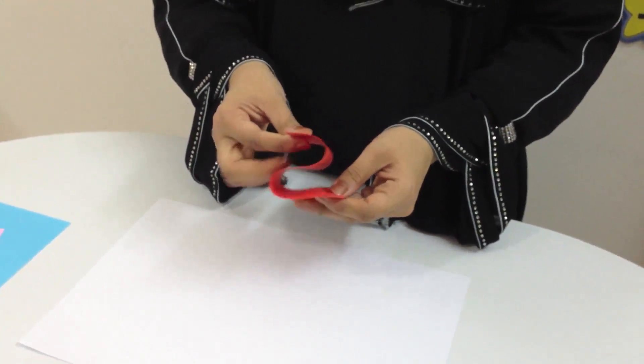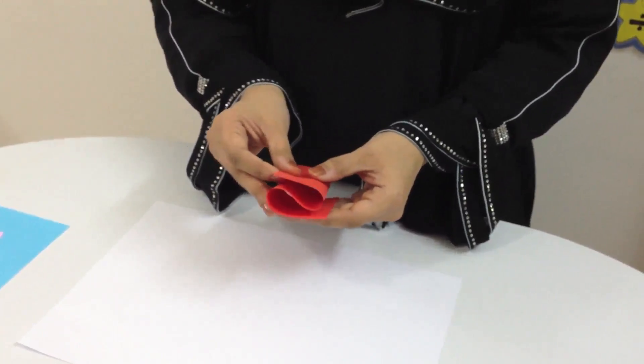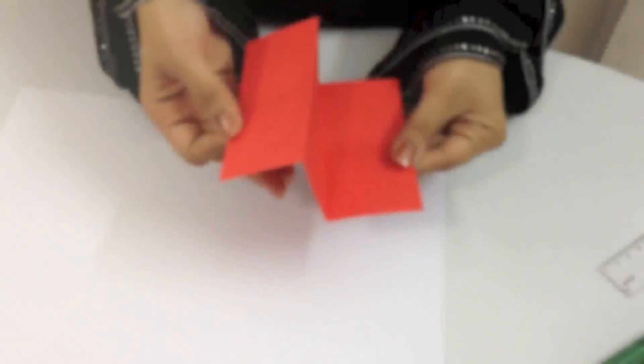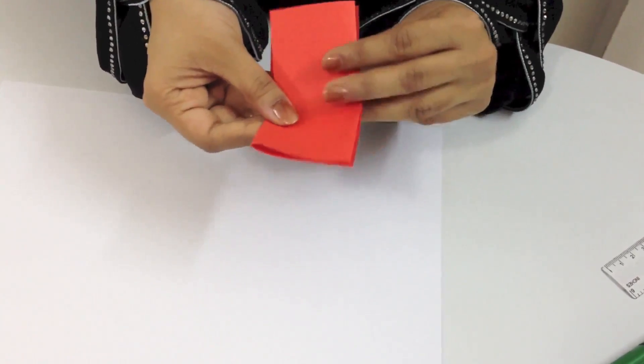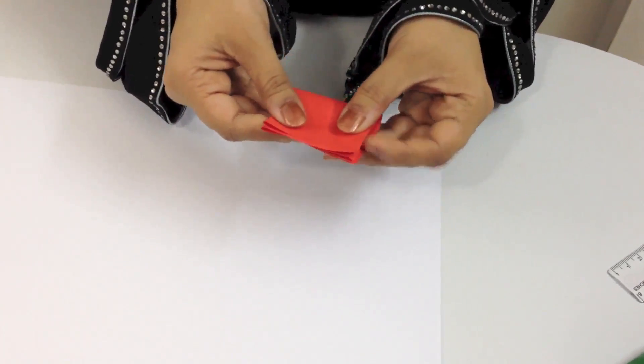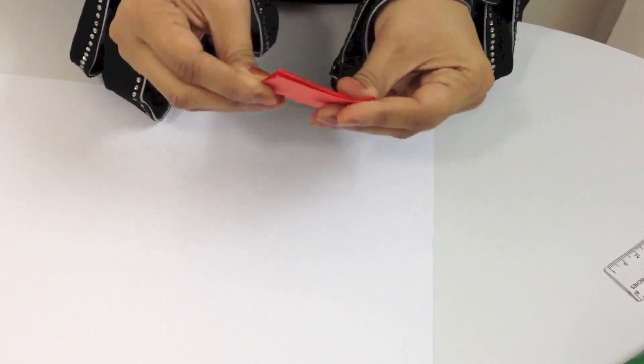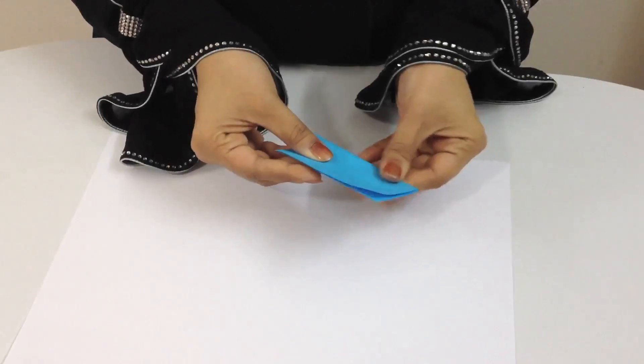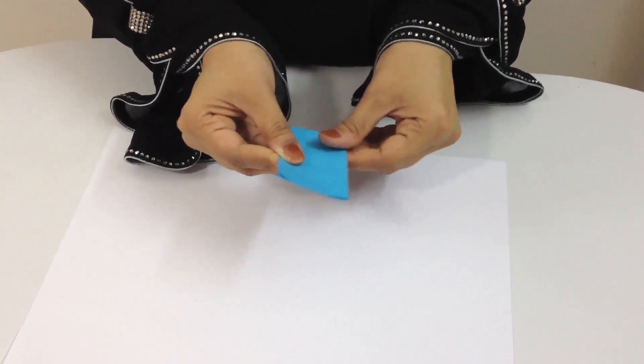And then we are going to further fold the paper upwards to get six equal folds - six equal parts.